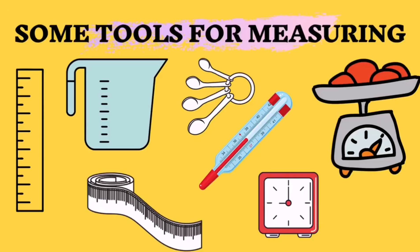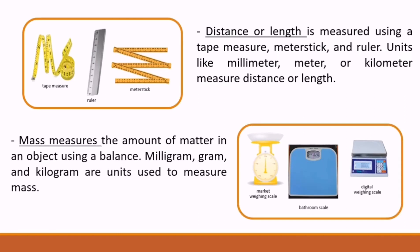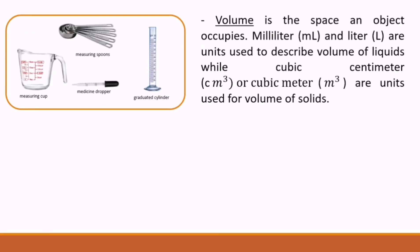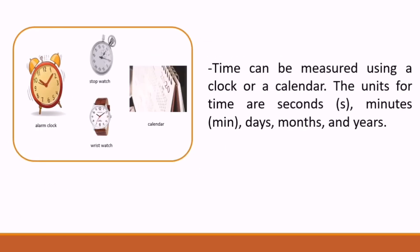Here are some tools we use for measuring. To measure the distance or length, we can use a tape measure, meter stick, and ruler. Units like millimeter, meter, or kilometer measure distance or length. Mass measures the amount of matter in an object using a balance. Milligram, gram, and kilogram are units used to measure mass. Volume is the space an object occupies. Milliliter and liter are units used to describe volume of liquids, while cubic centimeter (cm³) or cubic meter (m³) are units used for the volume of solids. Temperature measures how hot or how cold an object is, and can be measured using a thermometer. Units to describe temperature are degree Celsius, degree Fahrenheit, and Kelvin. And time can be measured using a clock or a calendar. Units for time are seconds, minutes, days, months, and years.